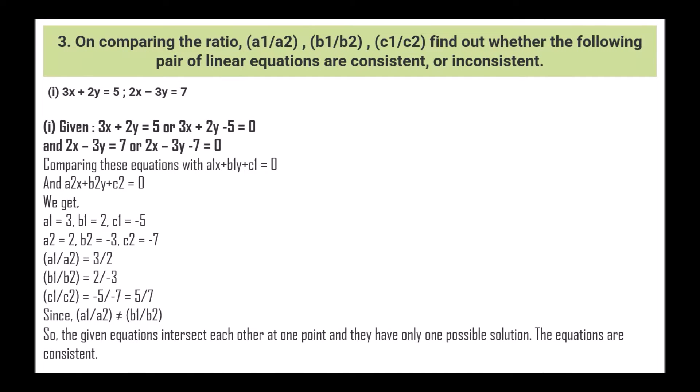Next, on comparing the ratios a1/a2, b1/b2, c1/c2, find out whether the following pairs of linear equations are consistent or inconsistent. First question: 3x + 2y = 5 and 2x - 3y = 7. Rewriting: 3x + 2y - 5 = 0 and 2x - 3y - 7 = 0. Comparing, we get a1 = 3, b1 = 2, c1 = -5 and a2 = 2, b2 = -3, c2 = -7.